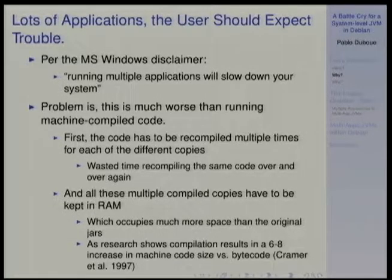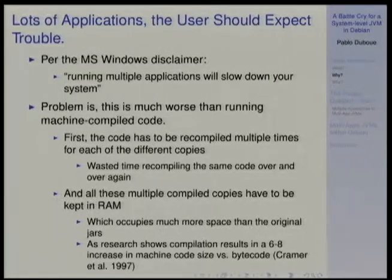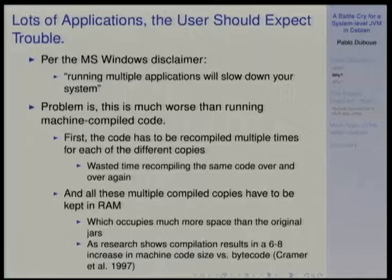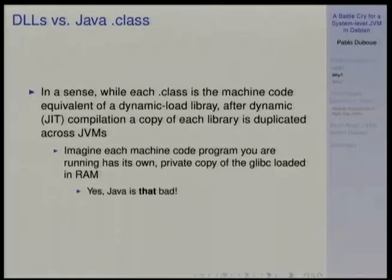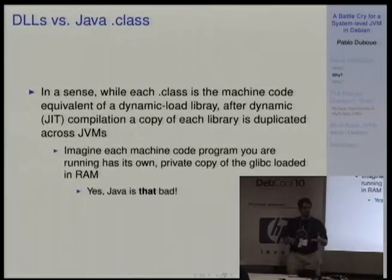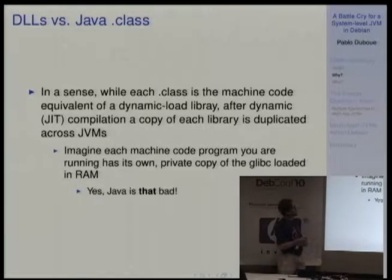The problem is that with just-in-time compilation, your code is being compiled multiple times for each of these things. It is wasted time recompiling, but it's just startup — something you can live with. The real problem is that all these multiple copies of bytecodes are living in RAM in separate places. Bytecode is very small, but the machine code that results from that is six to eight times bigger. This is the same as having a different copy of glibc loaded in RAM for every process you have — that's how bad Java is. You end up with duplication, and this is what we are putting our users through.